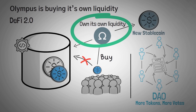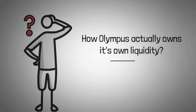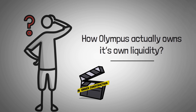With that popularity, these projects are able to offer crazy interest rates, which they've actually been able to hold for a decent amount of time. If you want to go down the rabbit hole of how Olympus actually owns its own liquidity, we'll be releasing a whole video on the specific Olympus protocol soon. But until then, let's get into how much money you can actually make from using it.